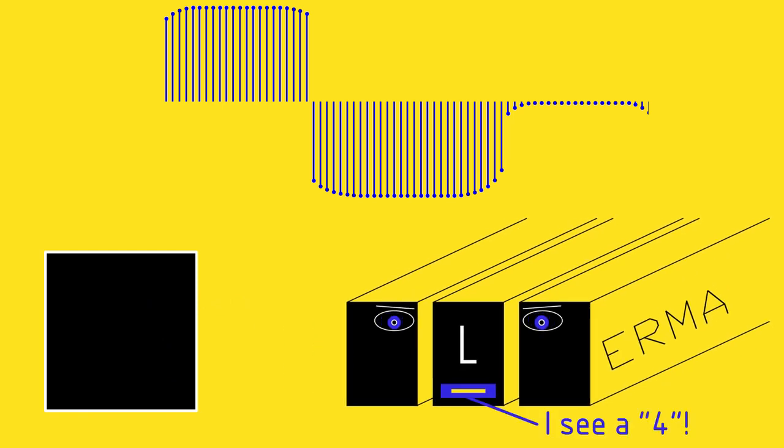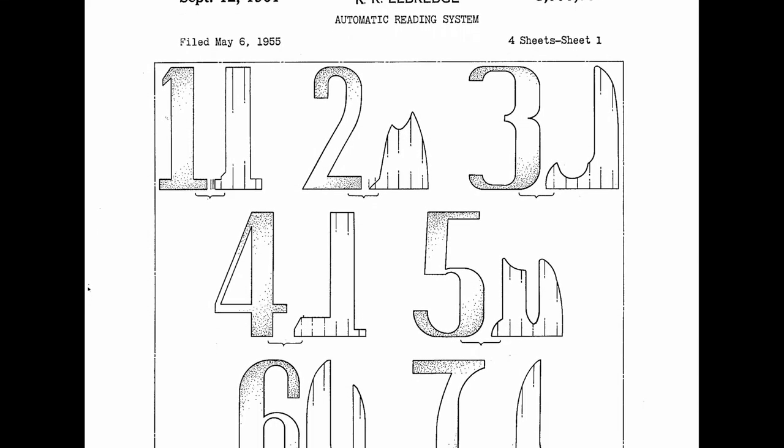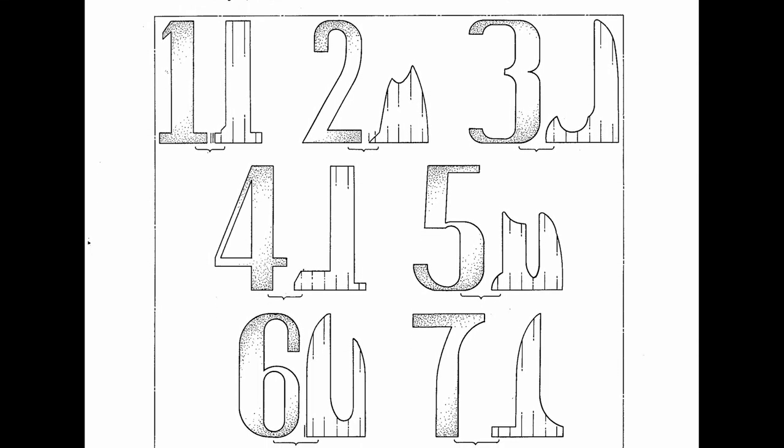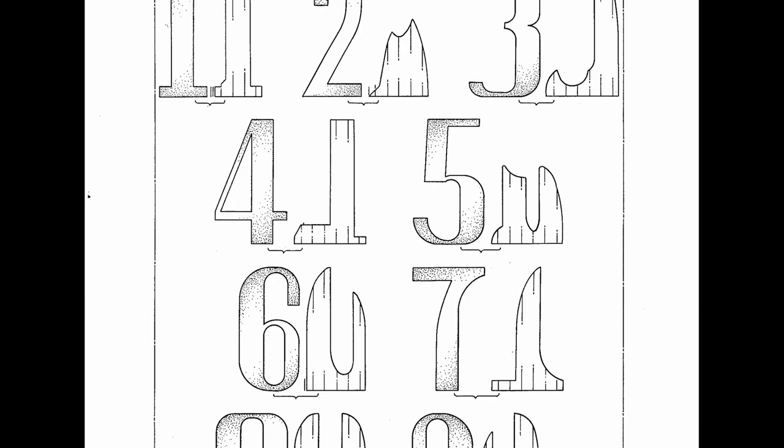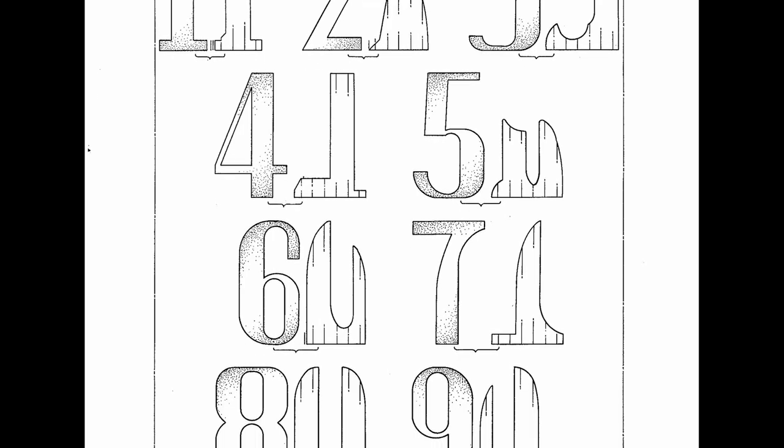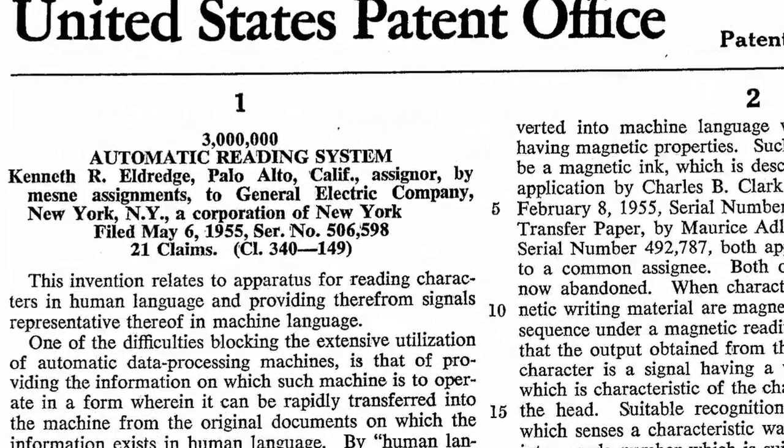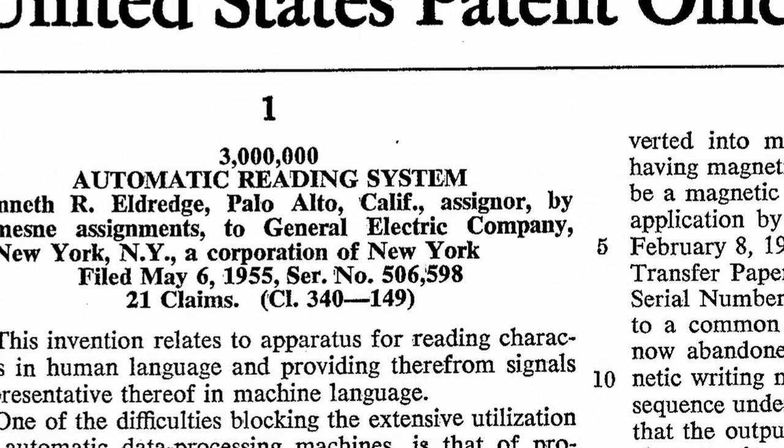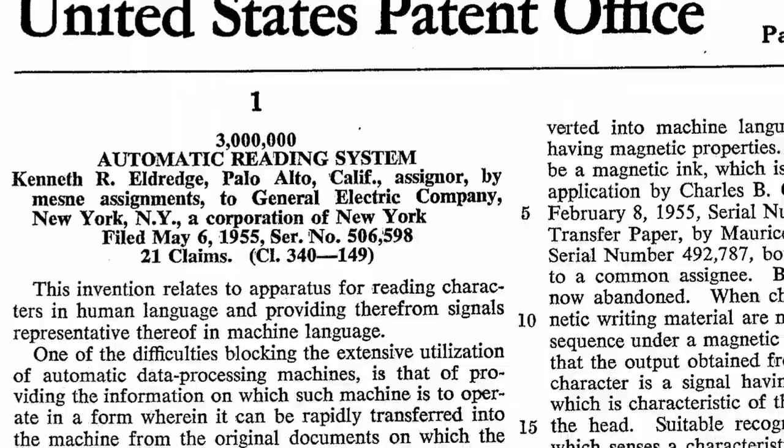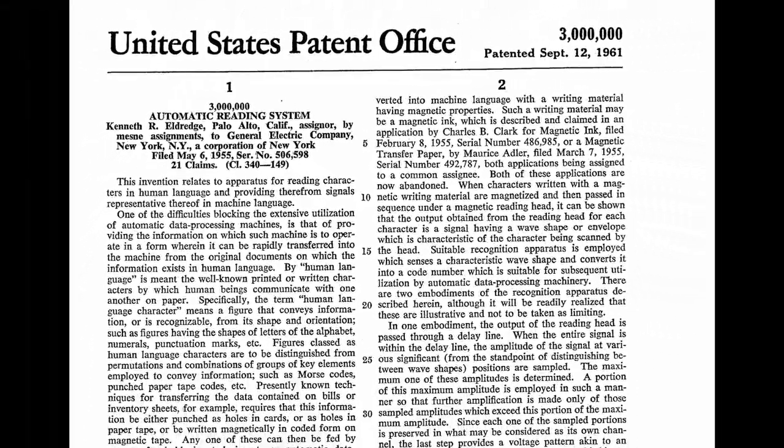The system was a fair compromise. The encoding scheme would now be visible to the end-user, but in a way that was much more tangible and familiar than the strange black bars of before. The bank was happy, SRI was happy, and Ken Eldridge was awarded the ceremonial 3 millionth US patent for his invention. Interestingly enough, this patent was awarded jointly to Eldridge and General Electric, not SRI or BA as you might expect, but that is a story for a different video.